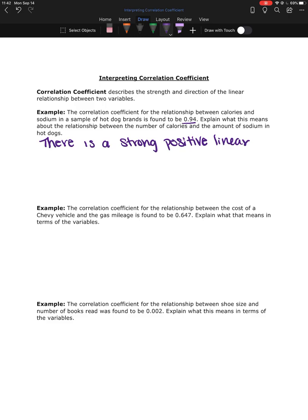Because 0.94 is very close to that positive 1, it falls between 0.7 and 1. So there is a strong positive linear relationship.